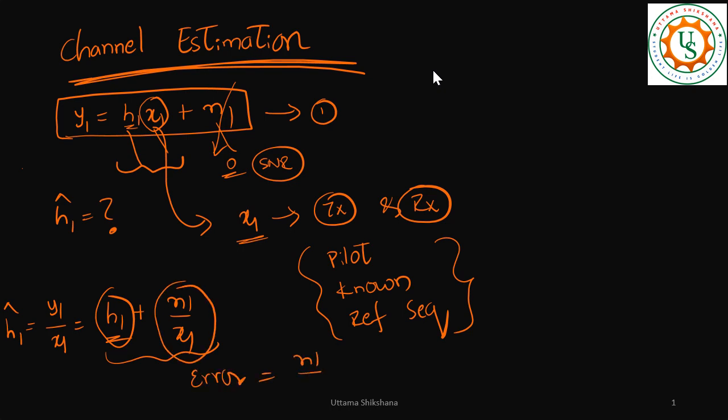So error is n1 by x1. To say whether my channel estimation is good or not, what is the measure? Mean square error. Mean square error is given by h hat minus h - you can say h1 - norm square, and because this is scalar you can just say mod square.